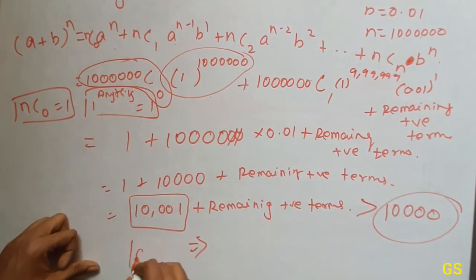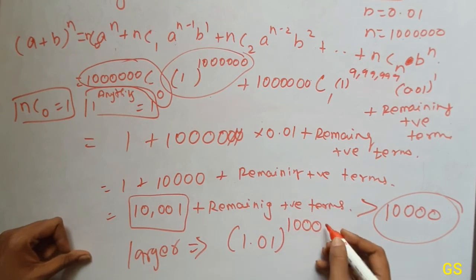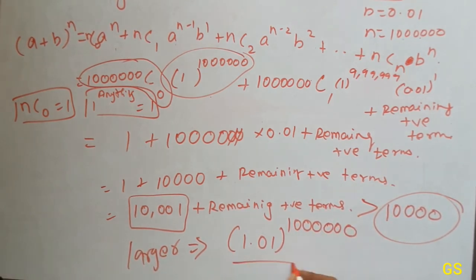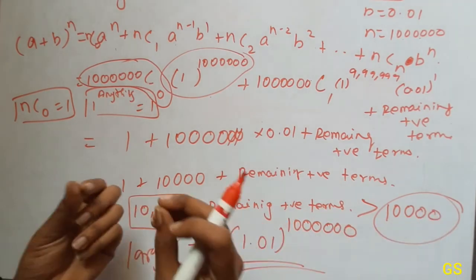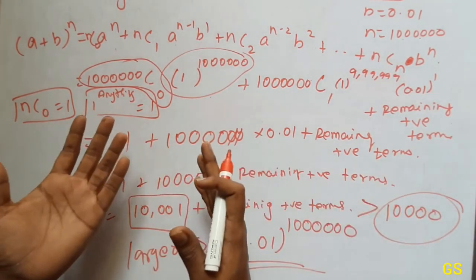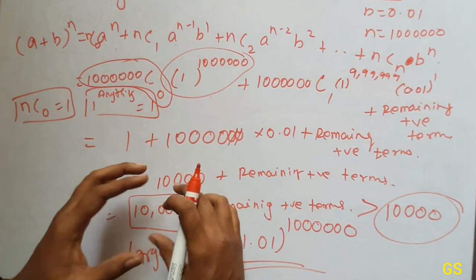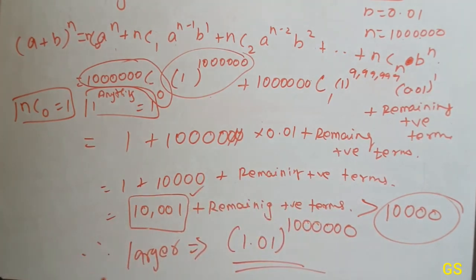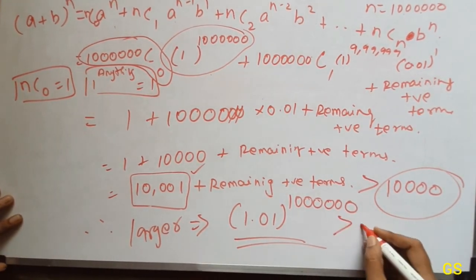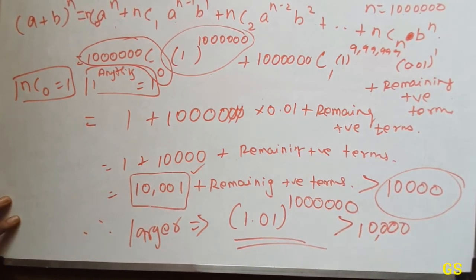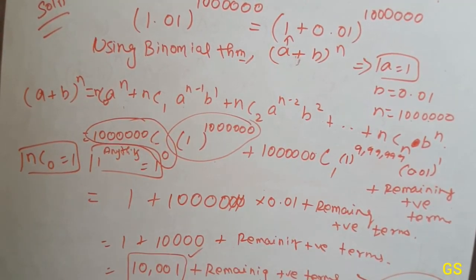Which is larger? The larger number is 1.01 the whole power 6-0, whole power 1,04,60 — this is larger. The term is 10,001. If you add the remaining terms, the larger is 1.01 power 10 lakhs. The term is greater than 10,000, so the next sum is greater than 10,000.